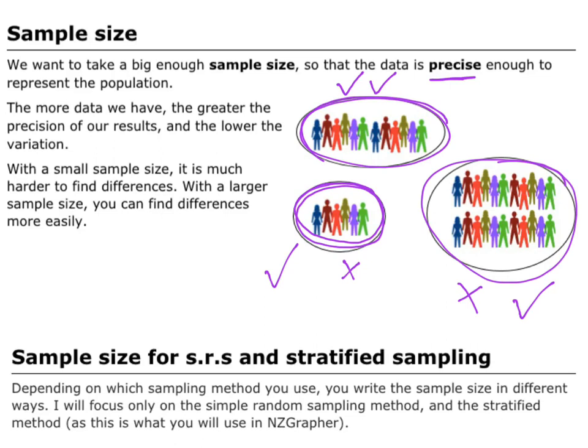When I talk about sampling and sample size, I need to be clear what my sample size is depending on which method I use. I can either use simple random sampling or stratified sampling — those are the two we'll use in NZ grapher. Depending on which method we use, it changes how we're going to explain and describe it.